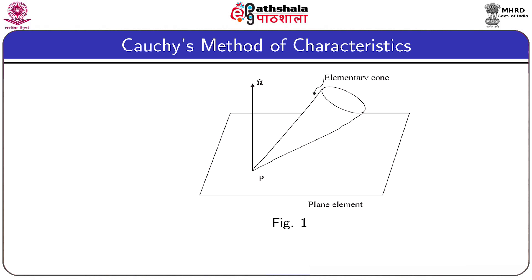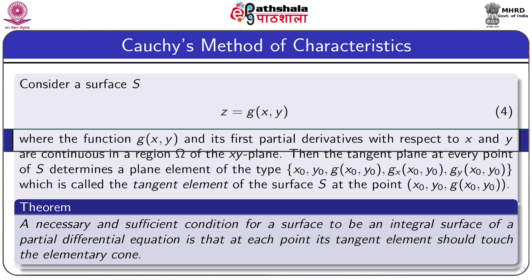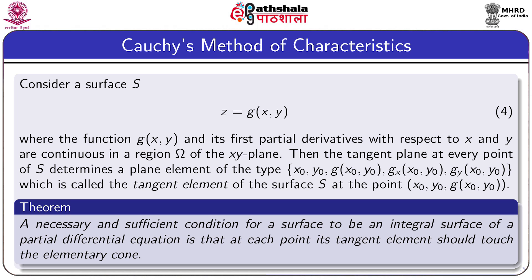The picture of the elementary cone is shown here, where P is the fixed point and n is the normal to a particular plane element. Now consider a surface S with equation z = G(x, y), where G and its first-order partial derivatives are continuous in some region Ω in the x-y plane. The tangent plane at every point of S determines a plane element of the type (x₀, y₀, G(x₀,y₀), Gₓ(x₀,y₀), G_y(x₀,y₀)).